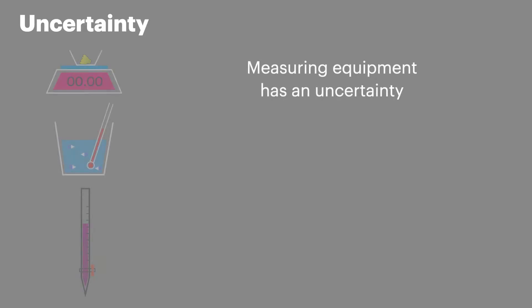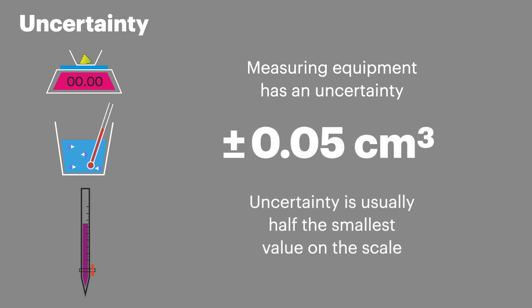Measuring equipment that we use in the lab has an uncertainty. This is how sensitive the equipment is. Uncertainties are often shown with this symbol, followed by the value of the uncertainty. If the uncertainty is not listed on the equipment, then we can assume that it's half the value of the smallest increment on the measuring scale.